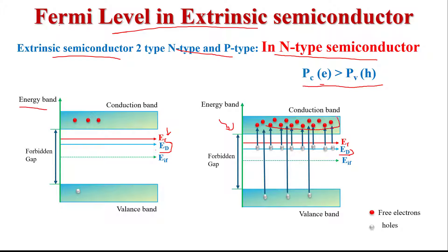Due to this jumping of electrons into the conduction band, the conduction band has a large number of electrons as compared to the valence band. Due to this, the Fermi energy level is near the conduction band, because we know the definition of Fermi level — it is the highest energy level which has 50% probability of occupation by an electron at zero degree temperature.